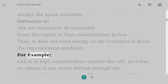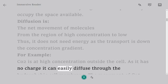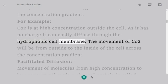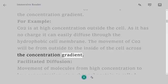For example, CO2 is at high concentration outside the cell. As it has no charge it can easily diffuse through the hydrophobic cell membrane. The movement of CO2 will be from outside to the inside of the cell across the concentration gradient.